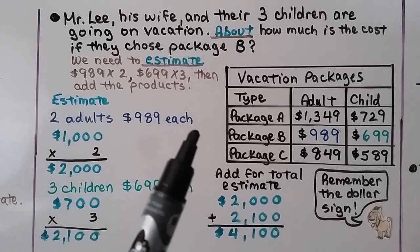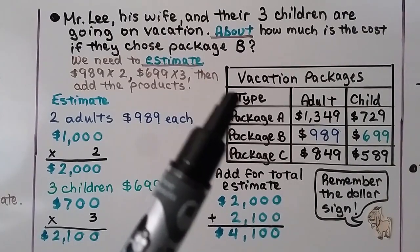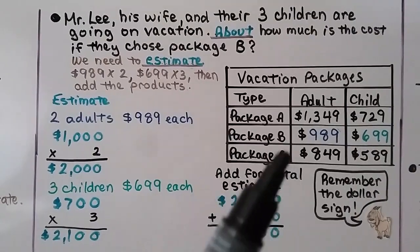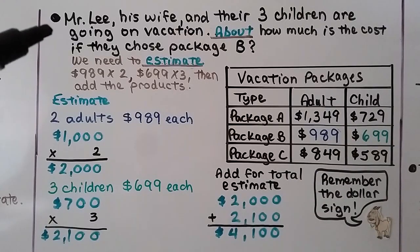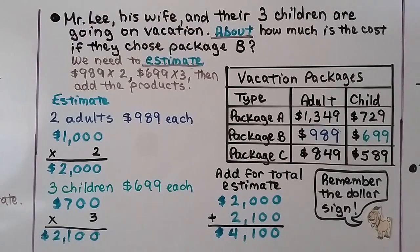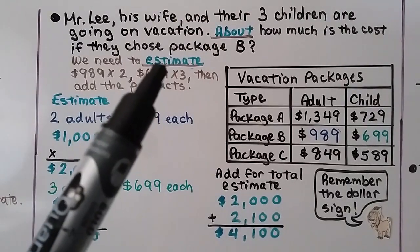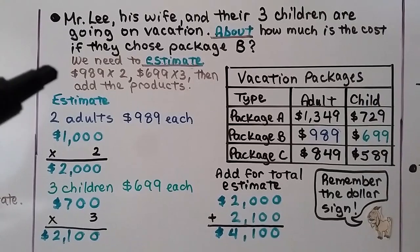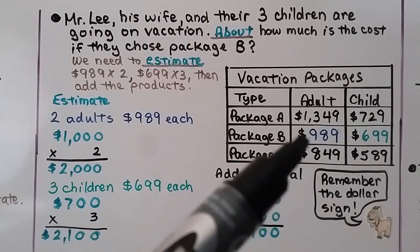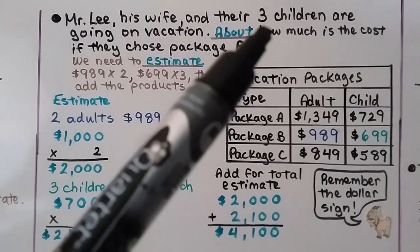Now we have a problem that involves a table — vacation packages with types A, B, and C, and prices for adults and children. Mr. Lee, his wife, and their three children are going on vacation. About how much is the cost if they chose package B? Since it says 'about how much,' we just need an estimate: 989 times 2 for the adults, and 699 times 3 for the three children.